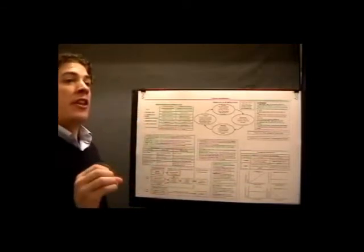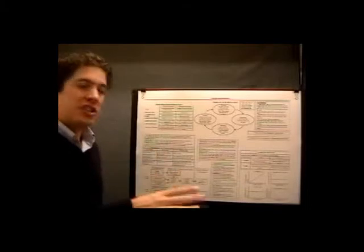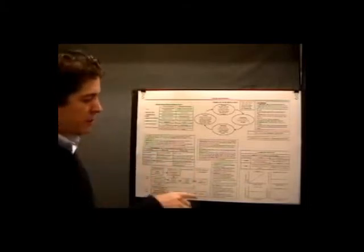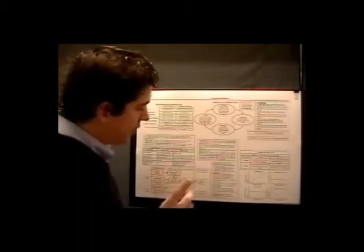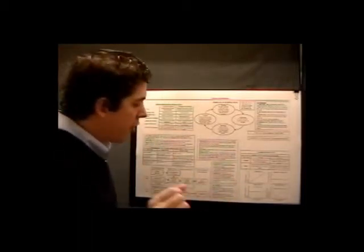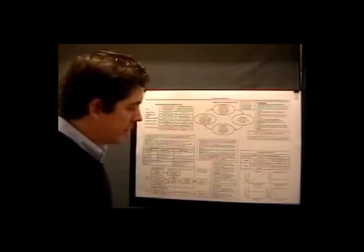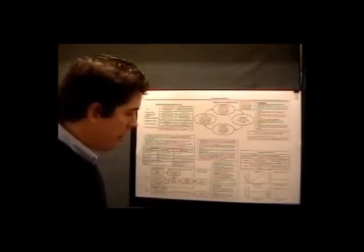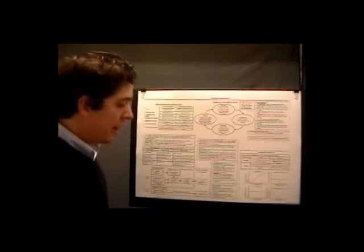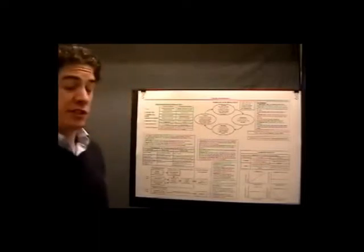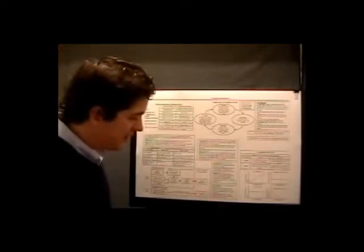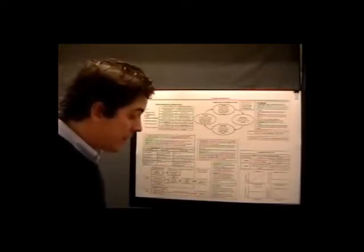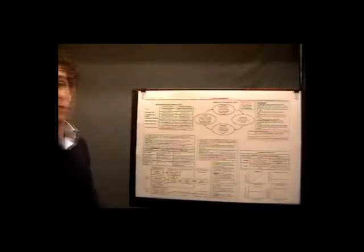In a manufacturing company, inventory on the balance sheet is broken into three components: raw materials, work in process, and finished goods. Raw materials are the materials used to make the product. Work in process consists of units that are partially complete but will require further work to be saleable to customers — it's not done, it's in process. Finished goods consist of units that have been completed but not yet sold to customers.